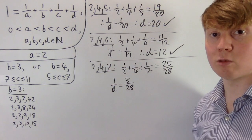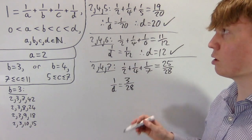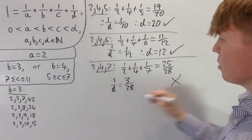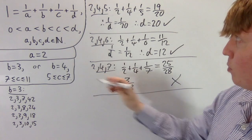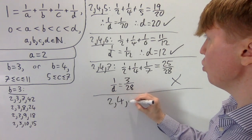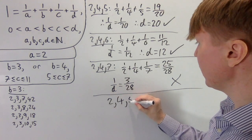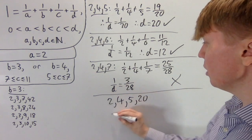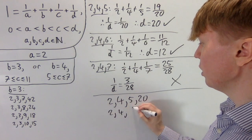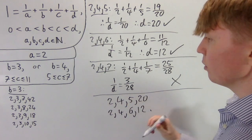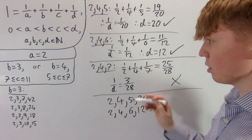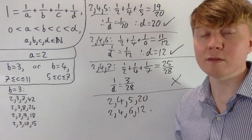To conclude: when b is four, we found two solutions — (2, 4, 5, 20) and (2, 4, 6, 12). Combined with the four solutions when b is three, we have six distinct ways of writing one as the sum of four different unit fractions.